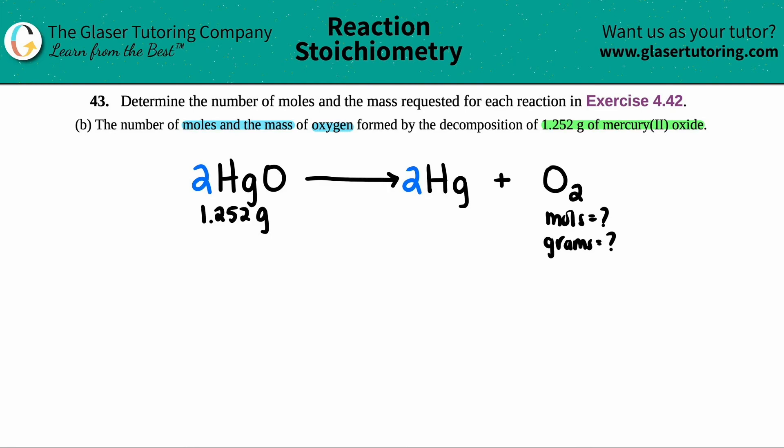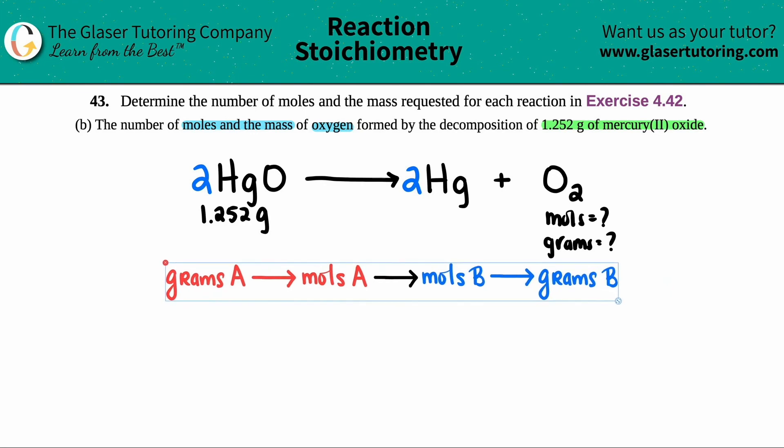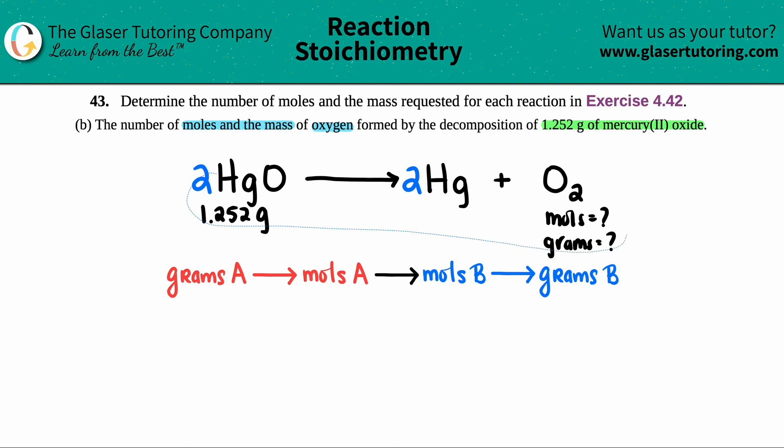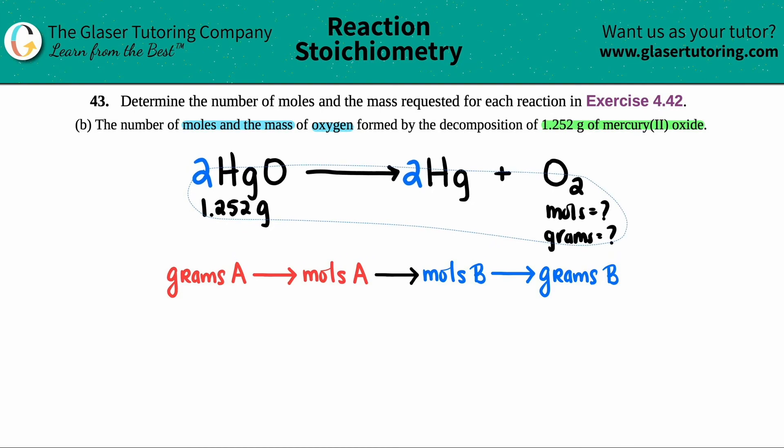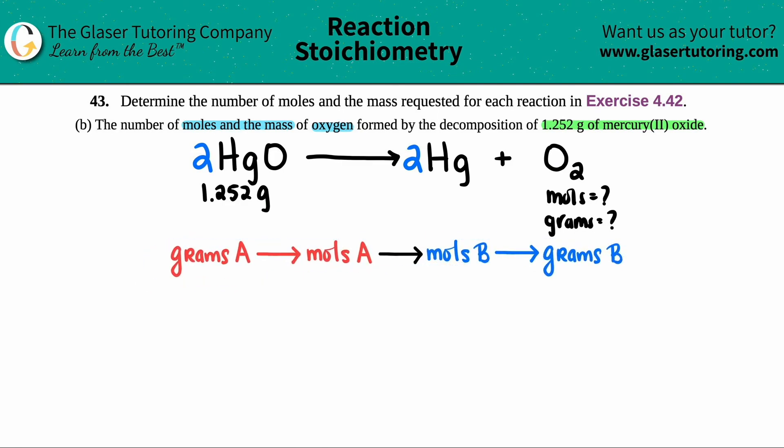So when you see this pattern of giving information of one compound and they're asking you for a totally different compound or molecule in the same balanced equation, this is stoichiometry. Now don't be scared. All right. We got this. This is just a bunch of ratios and most of the stuff you already learned. All right. Now there's a cool breakdown of how to do stoichiometry. And that is right here. Let me just bring this down and maybe resize it a little bit. Perfect. So that I can resize this. Awesome.